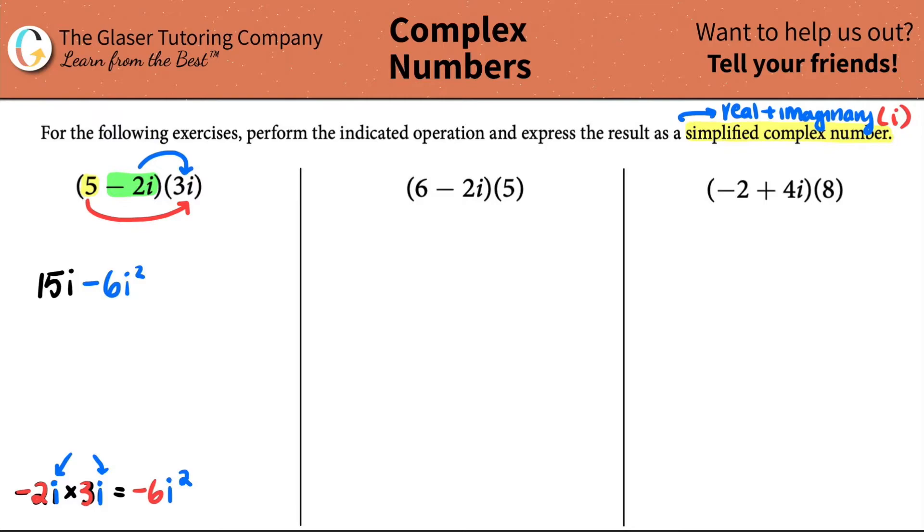i squared, or any i above i, so i to the third, i to the fifth, i to the 250, you all have to simplify those. Well, you might be saying, Christina, how am I going to simplify that? There's a trick here. You have to know, so star this up. You have to know that i squared is the same thing as a negative 1 value. So anytime that you see an i squared, you can always just turn that into a negative 1.